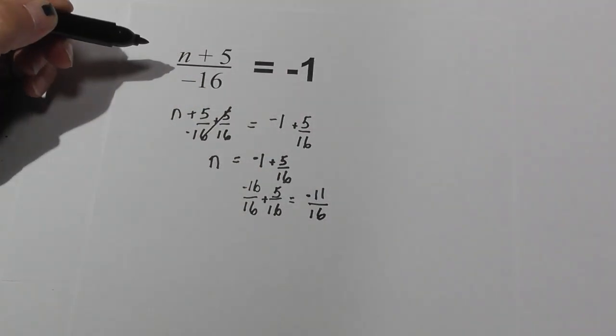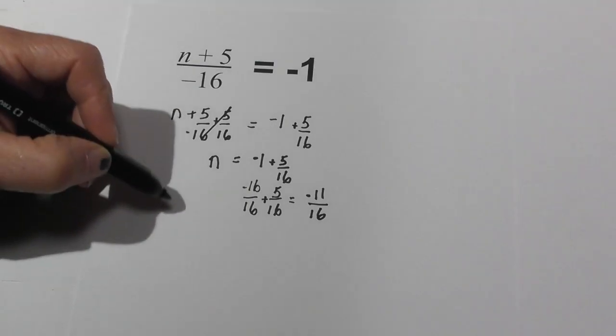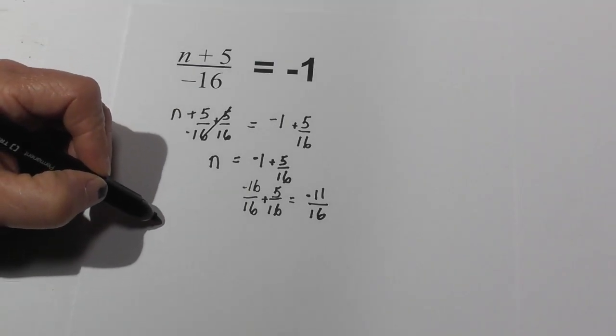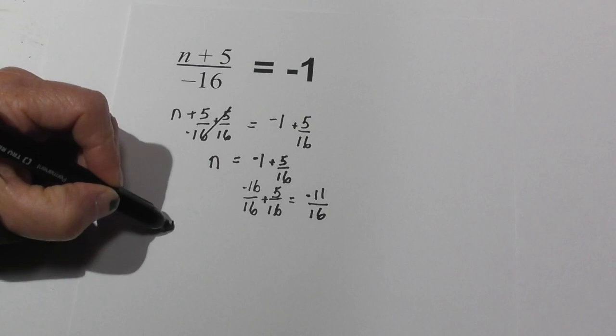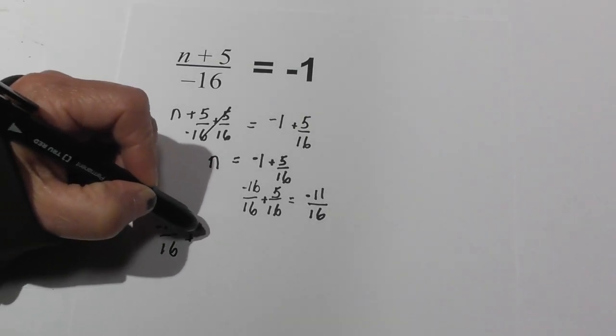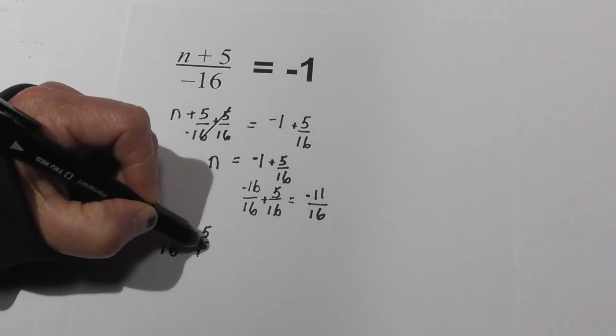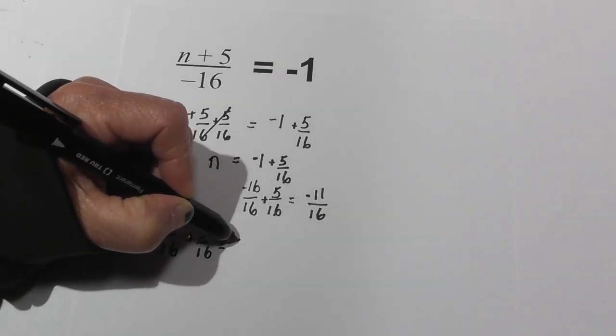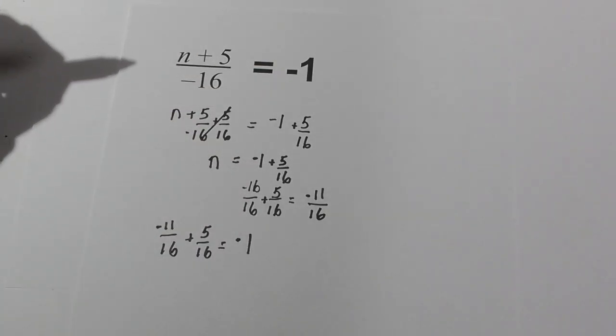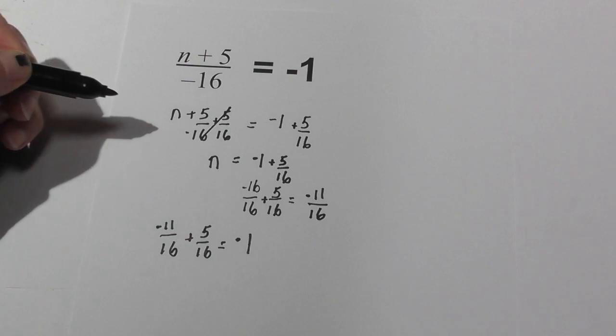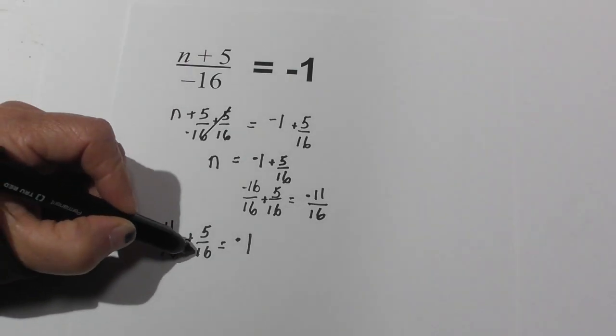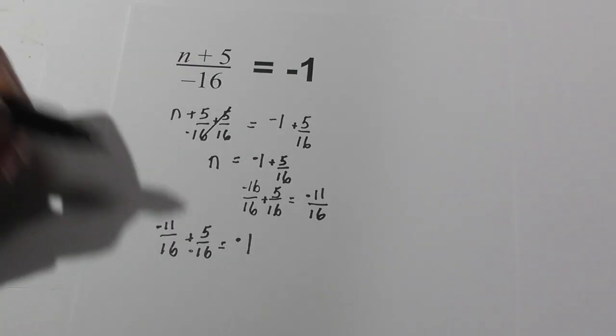Now let's plug it in and see if it works. So we have negative 11 sixteenths plus 5 sixteenths equals negative 1. I left one thing off—this 16 is a negative.